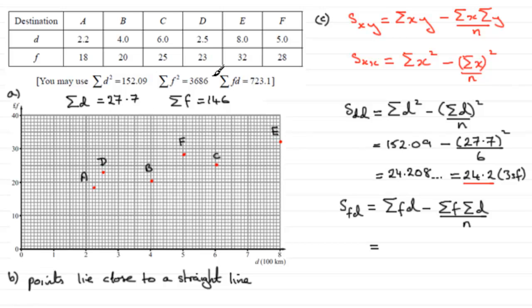It is 723.1. So 723.1 and then minus Sigma F, which we just worked out, is 146.